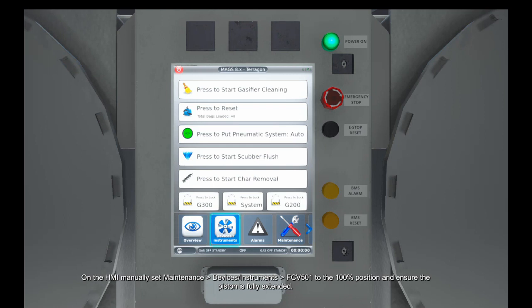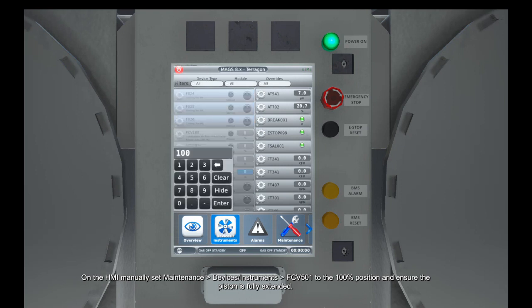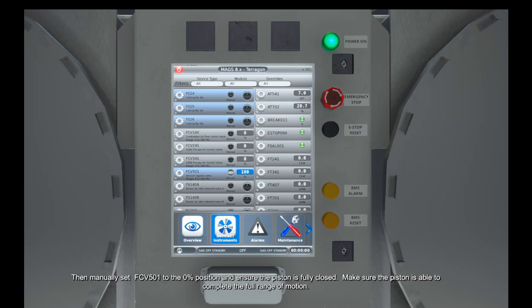On the HMI Devices Instruments tab, manually set FCV501 to the 100% position and ensure the piston is fully closed. Make sure the piston is able to complete the full range of motion.